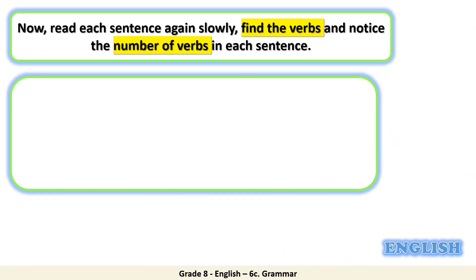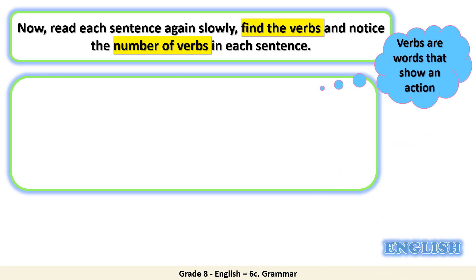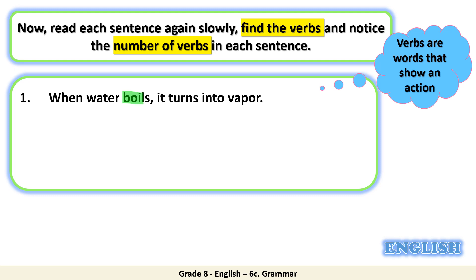Now read each sentence again slowly. Find the verbs and notice the number of verbs in each sentence. Let's remember together what's the meaning of verbs. Verbs are words that show an action. Number one: when water boils it turns into vapor. Where is the action in this sentence? Boils. Is there any other action? Yes — turns.